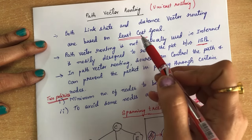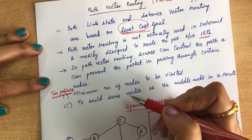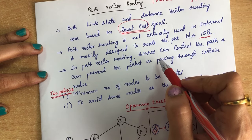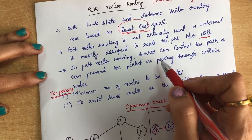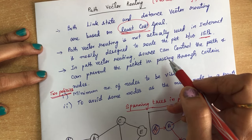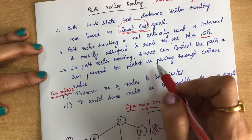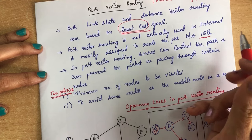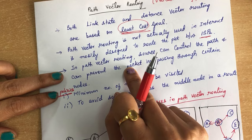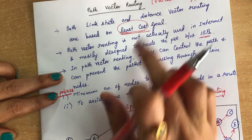But path vector routing does not make use of the least cost method. In path vector routing, the source can control the path — meaning the source can decide which path it will use to pass the packet. Based on some policies, it can restrict the path from flowing through certain nodes. This methodology is not available in link state or distance vector routing.